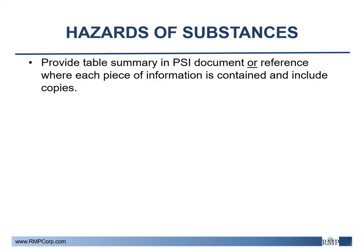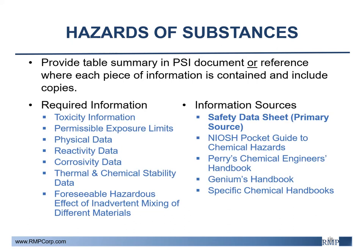The best way to organize chemical information in this section is to provide a table summary in the PSI document or to reference the location of where the information sources can be located. The required information to include in the PSI program includes toxicity information, permissible exposure limits, and much more as listed. The main source of information can be located in the chemical safety data sheet or SDS. This will contain physical, reactivity, thermal, and chemical stability data.